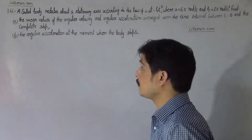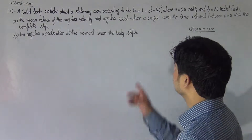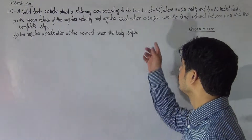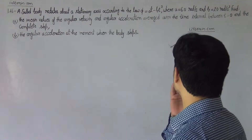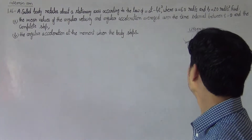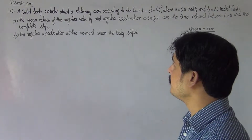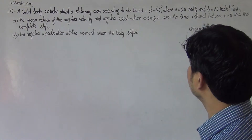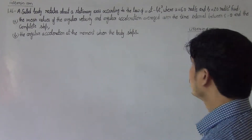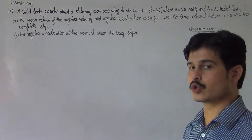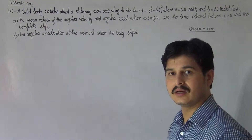Hello students, this is problem 1.46. A solid body rotates about a stationary axis according to the law φ = AT - BT³, where A is 6.0 radian per second and B is 2.0 radian per second cubed. Find: first, the mean value of angular velocity and angular acceleration averaged over the time interval from T equal to 0 up to complete stop; and second, the angular acceleration at the moment when the body stops.